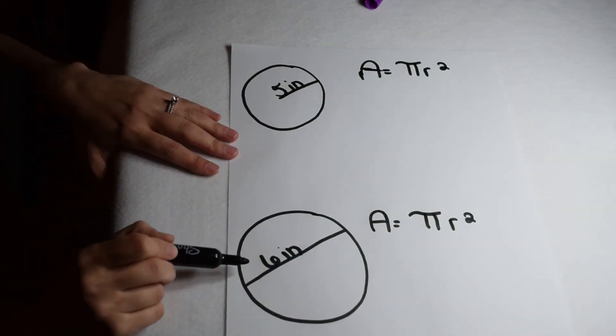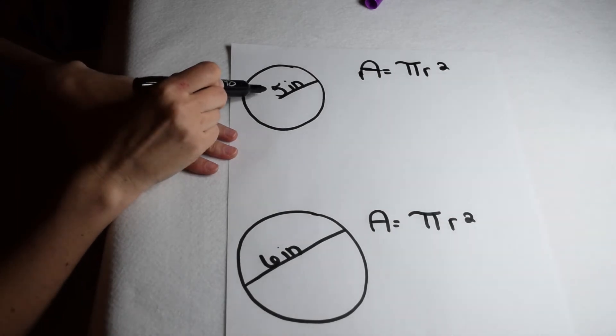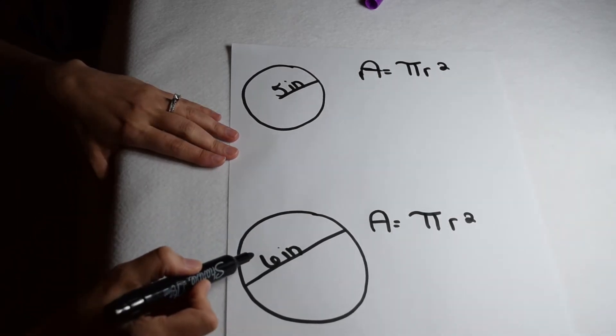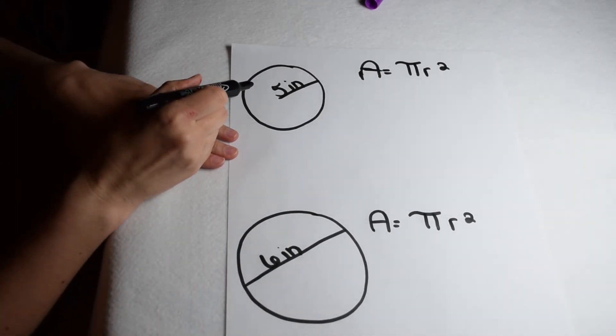We're going to look at two examples for finding the area of the circle. One where we're told what the radius is, and the other where we're told what the diameter is. Let's start out with our radius.